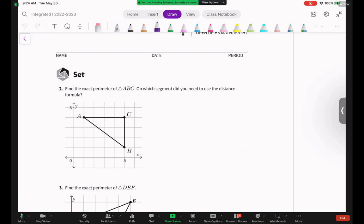And here are the directions. It says, find the exact perimeter of triangle ABC on which segment did you need to use the distance formula. So whenever they say this word exact here, they mean don't round.